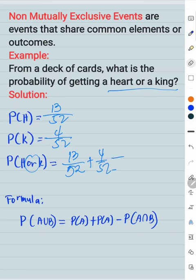Then, subtract that one card that is a king at the same time a heart. There is one, so out of 52.